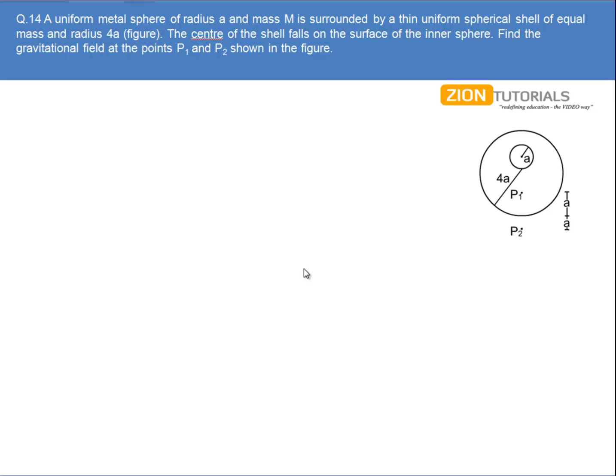A uniform metal sphere of radius a and mass m is surrounded by a thin uniform spherical shell of equal mass but radius 4a. The center of the shell falls on the surface of the inner sphere. Find the gravitational field at points P1 and P2 as shown in the figure.